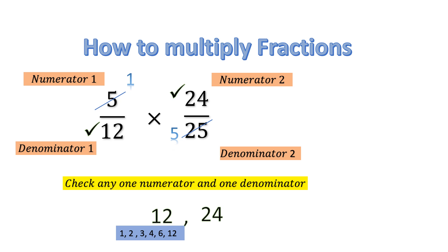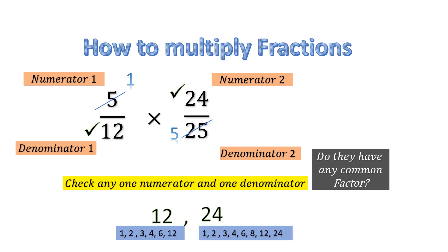And the factors of 24? 1, 2, 3, 4, 6, 8, 12, and 24. Do they have any common factor? Yes, they have so many common factors: 2, 3, 4, 6, and 12. So other than 1, there are many common factors.